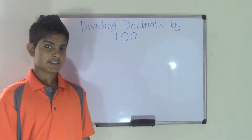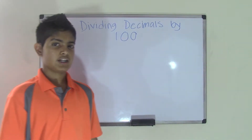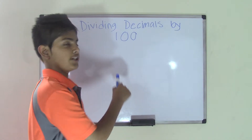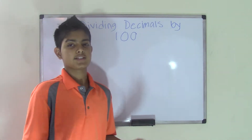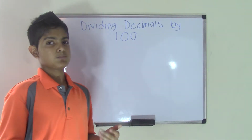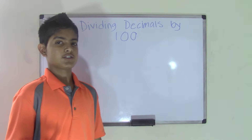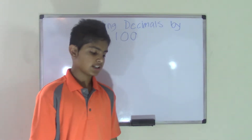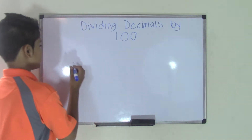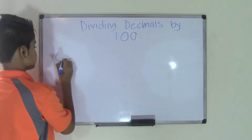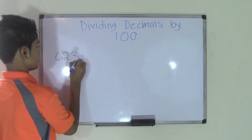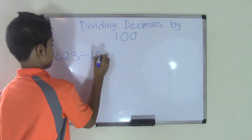Hey guys, welcome back to Bronson Math Club. Today I'm going to be doing the topic dividing decimals by 100. Now this topic is fairly like the topic dividing decimals by 10. So stick with me. Let's take a problem — the problems you'll see would be something like 62.3 divided by 100.